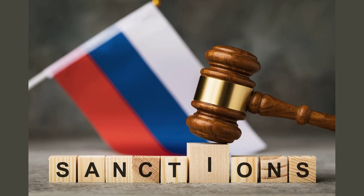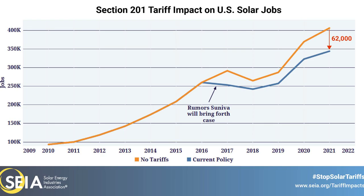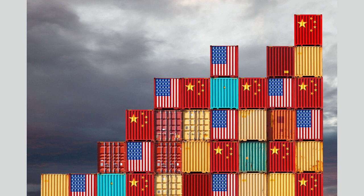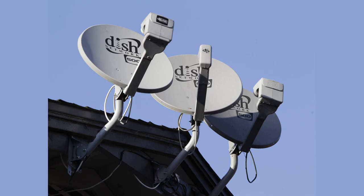The US government threatened to impose trade sanctions if Japan did not take steps to address this issue. The trade war reached its peak in the early 1990s, when the US imposed punitive tariffs on a range of Japanese products, including automobiles, steel, and electronics. These tariffs were intended to protect American industries and force Japan to open its markets further. The US-Japan trade war had far-reaching consequences for both countries and the global economy, straining diplomatic relations, disrupting supply chains, and impacting industries on both sides.